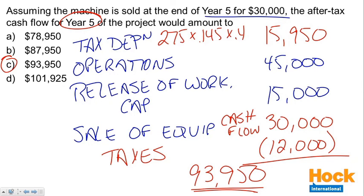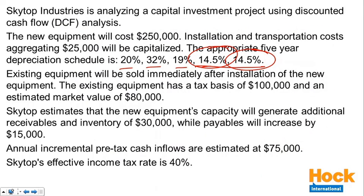This is a nice capital budgeting cash flow question — it goes through and calculates cash flows at the initial investment, one year of the project, and the final year where the equipment is sold and working capital is released. It's just a matter of taking the information out of the question. In the second question, we went through and crossed out all the information to make sure we'd accounted for it.